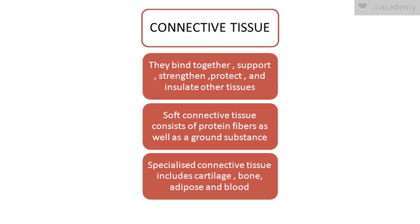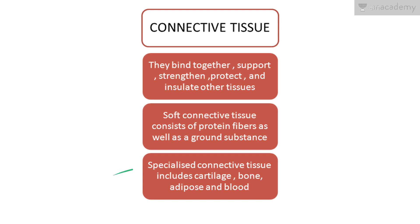Next is connective tissue. Its function is to bind together, support, strengthen, protect and insulate other tissues. Soft connective tissue consists of protein fibers as well as ground substance. Specialized connective tissue includes cartilage, bone, adipose and blood.